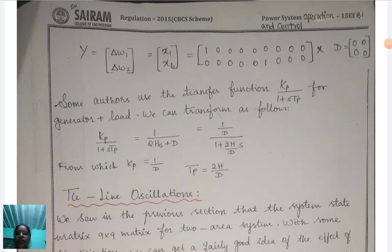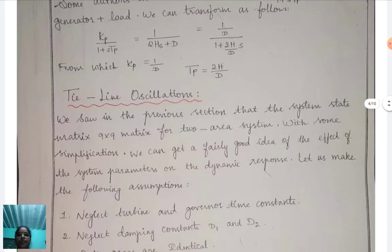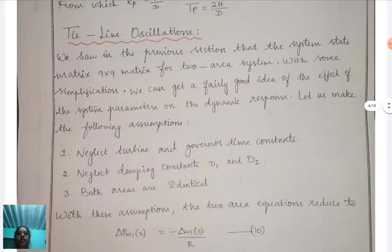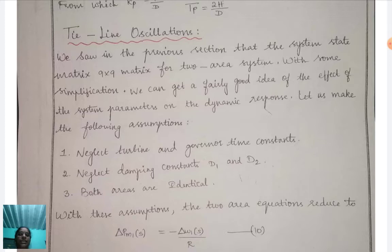Dear student, I will now give a lecture on tie-line oscillation of a two-area system. In the previous section, we studied the system state matrix — a 9x9 matrix for the two-area system. With some simplification, we can get a fairly good idea of the effect of system parameters on the dynamic response. Dynamic response means the parameter changes with respect to time.